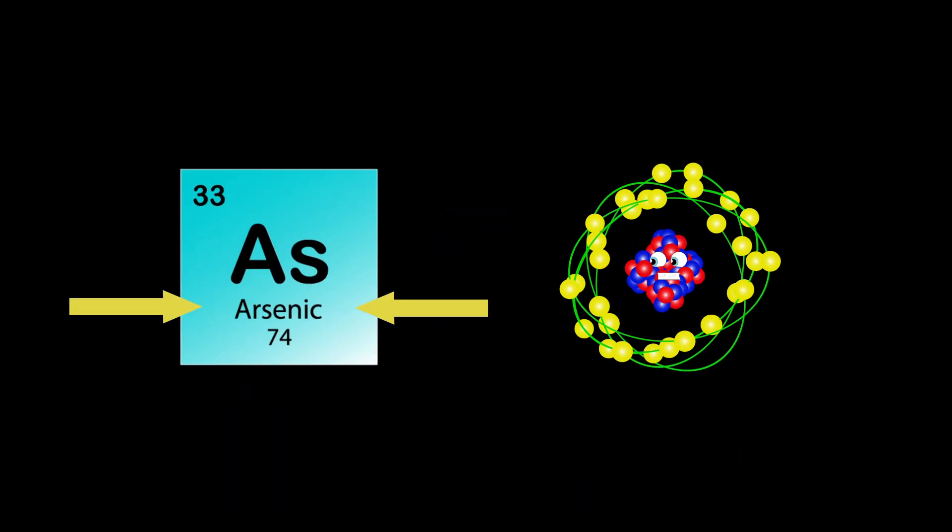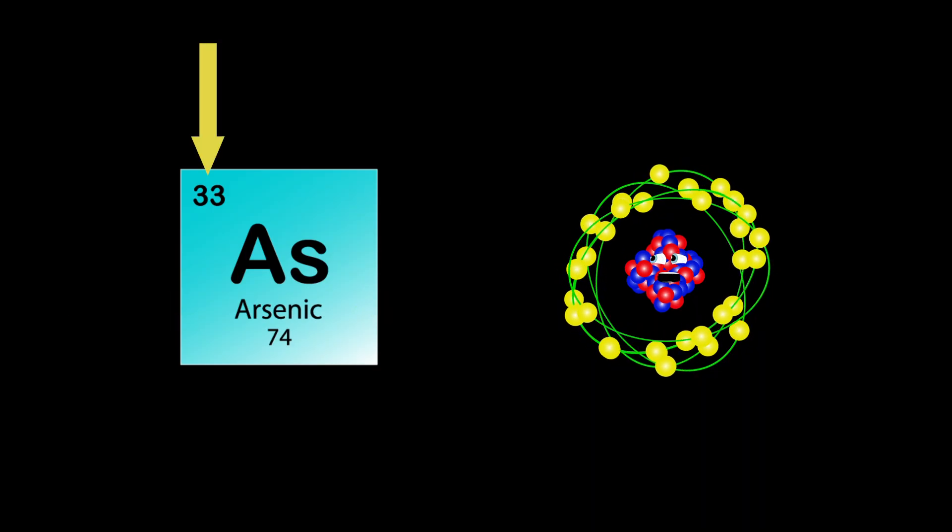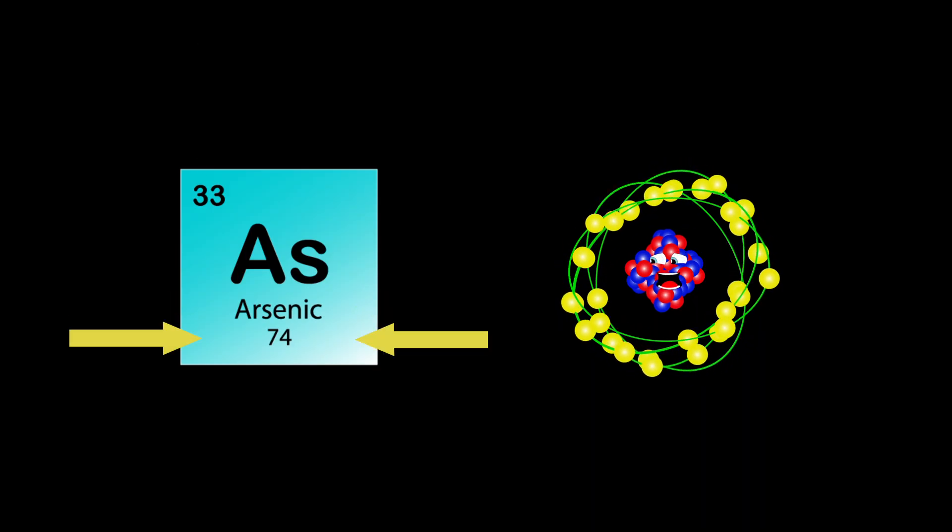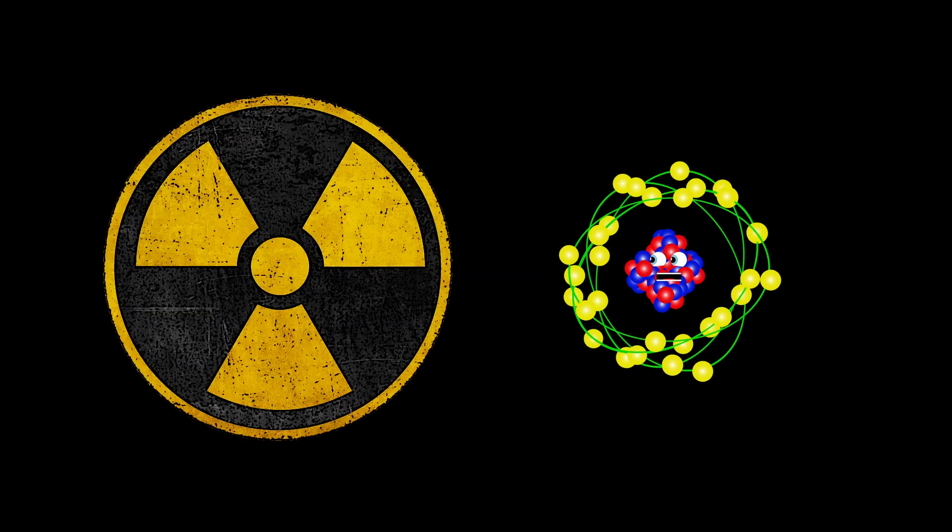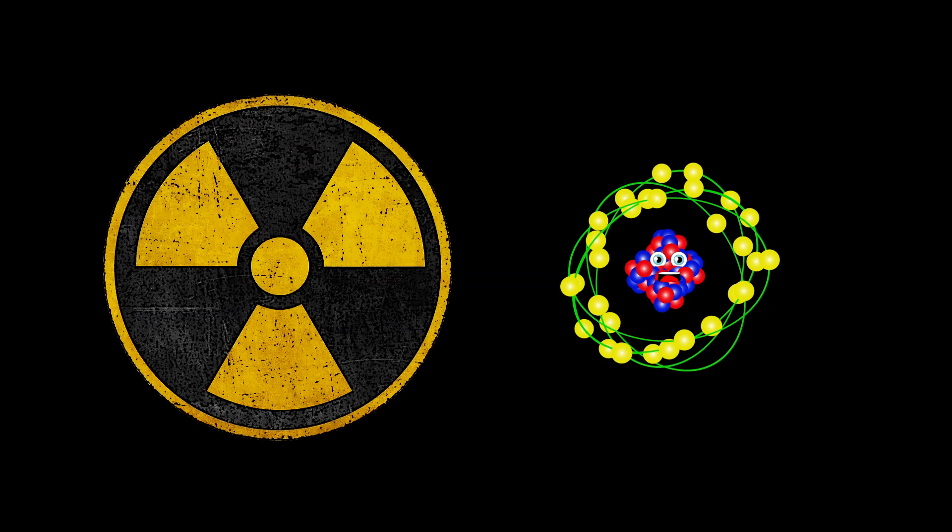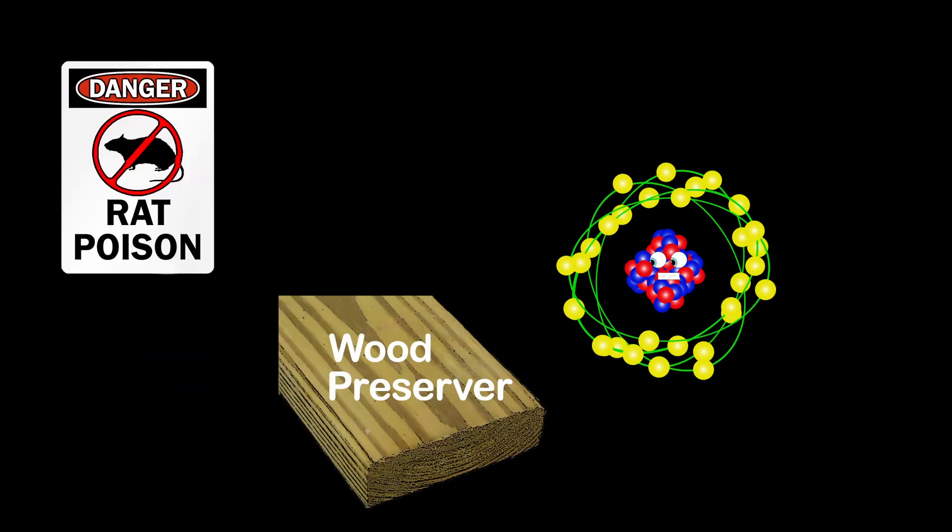My name is Arsenic, my atomic number is 33. My atomic mass is 74, As is the symbol you see. Due to my toxicity, my compounds are often used in insecticides and wood preservation, that is true.